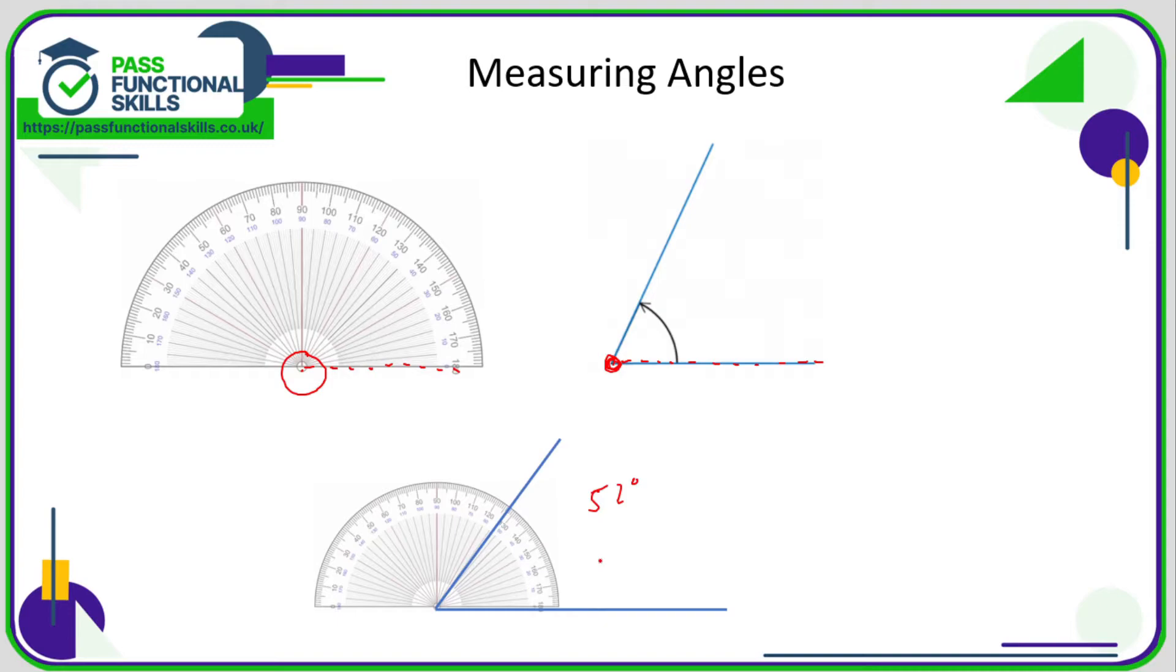But I wouldn't stress about if it's not obvious exactly how exact the angle is. Normally, an examining board would accept a range of values, so perhaps between 51 and 53 degrees. But for me, that's approximately 52 degrees. As long as you know how to measure an angle, that's the most important thing. The key thing is line this up on your angle and make sure that this side of the protractor sits flush on the base of the angle.